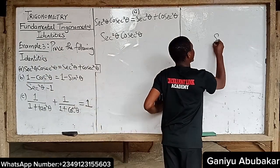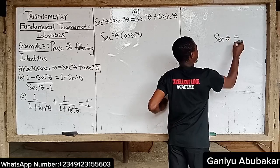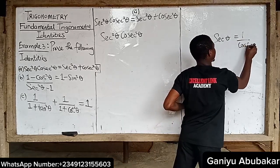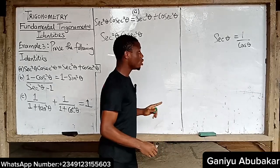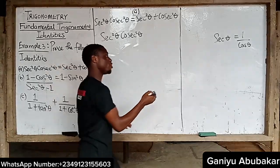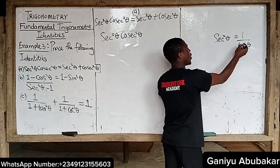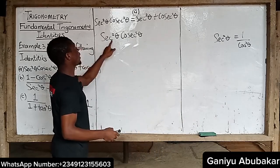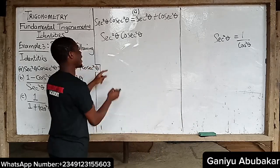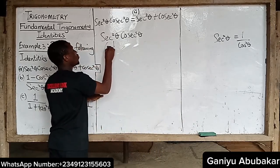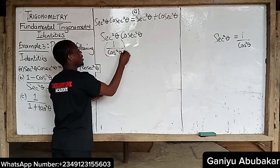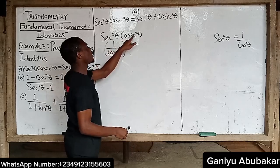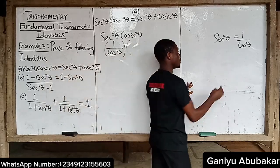We know that sec theta can be expressed as one over cos theta from our basic identities. So if we square it, sec squared theta equals one over cos squared theta. That's for this term alone.